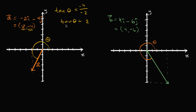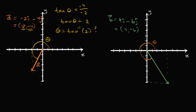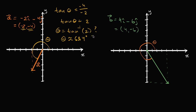If we want to solve for theta, we could say theta is equal to the inverse tangent of two — and I'm going to put a question mark, and I think you might know why. So if we take the inverse tangent of two, it's about 63.4 degrees roughly. So this gives me theta is approximately 63.4 degrees — and I'm going to put a question mark here.